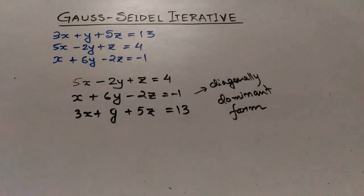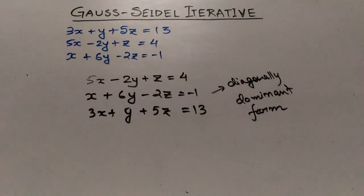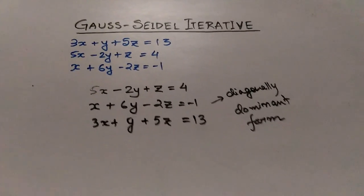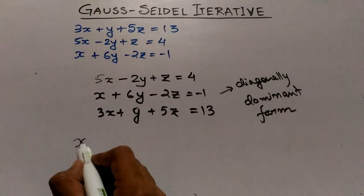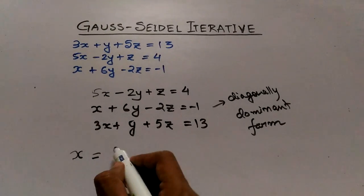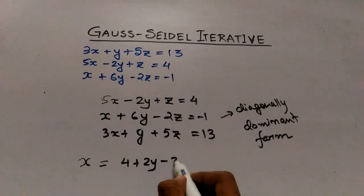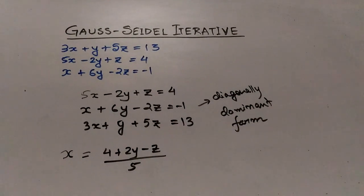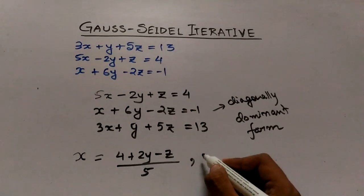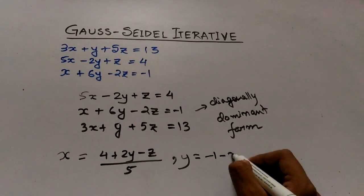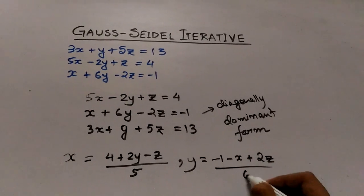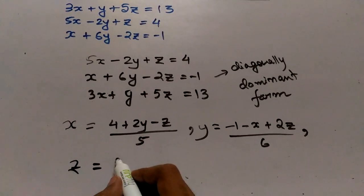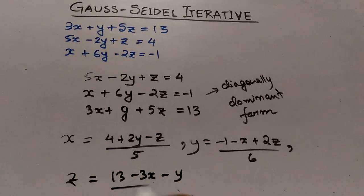Next, I will rearrange the equations so that only one variable is on one side and the rest two variables are on the other side. For x using the first equation: x = (4 + 2y − z) / 5. For y using the second equation: y = (−1 − x + 2z) / 6. For z using the last equation: z = (13 − 3x − y) / 5.